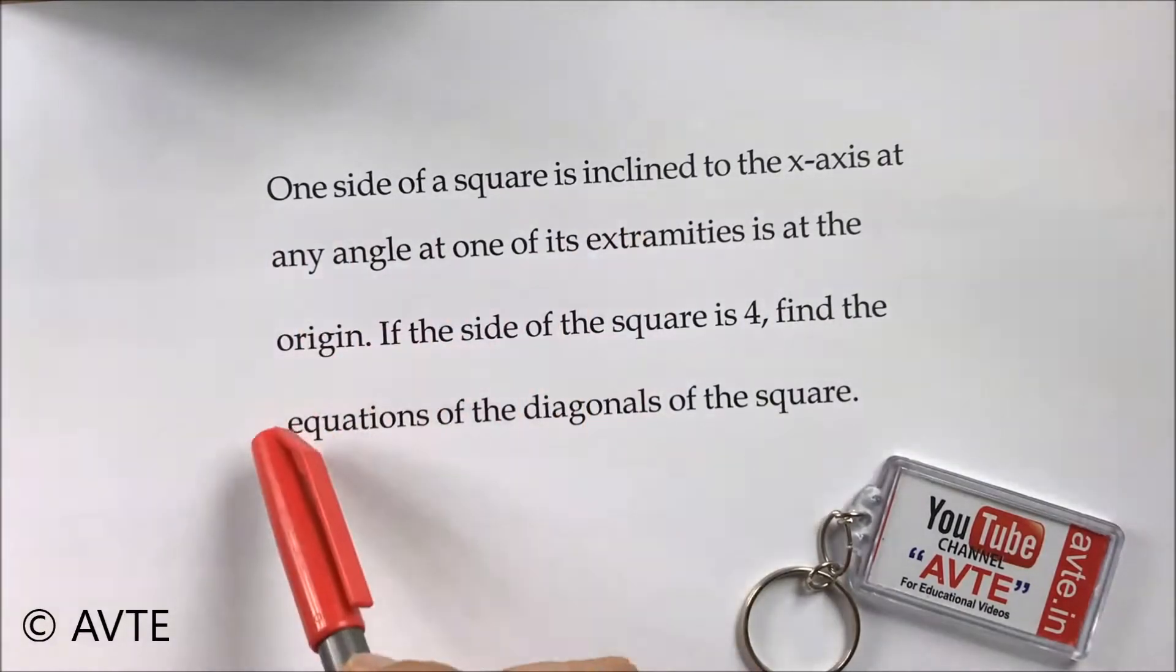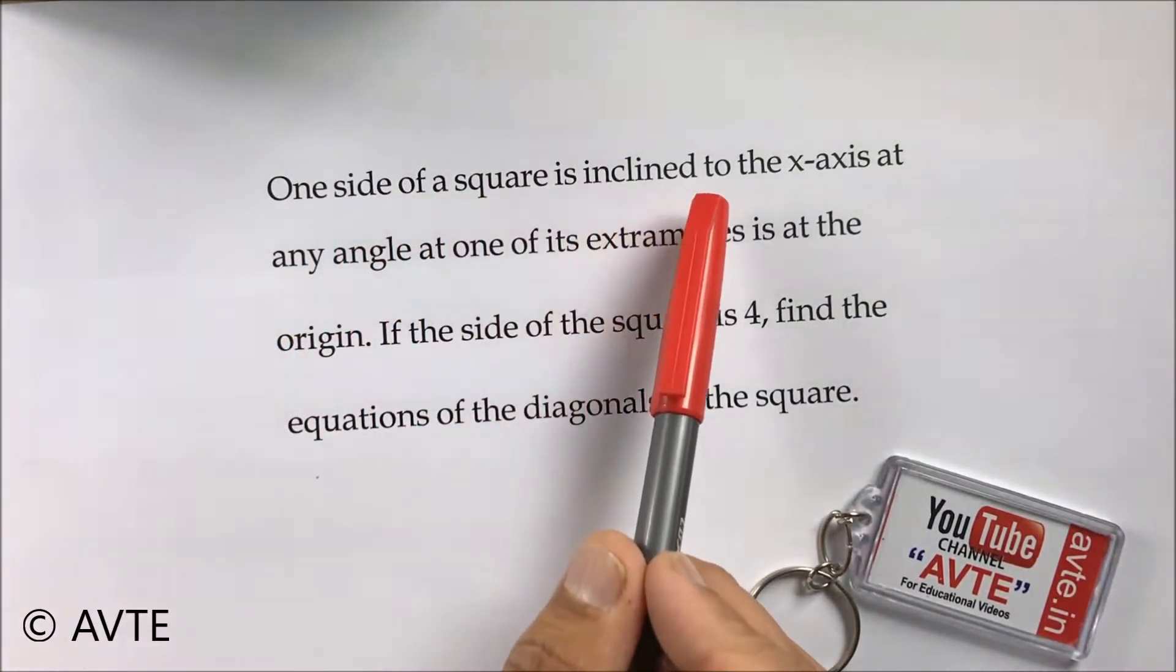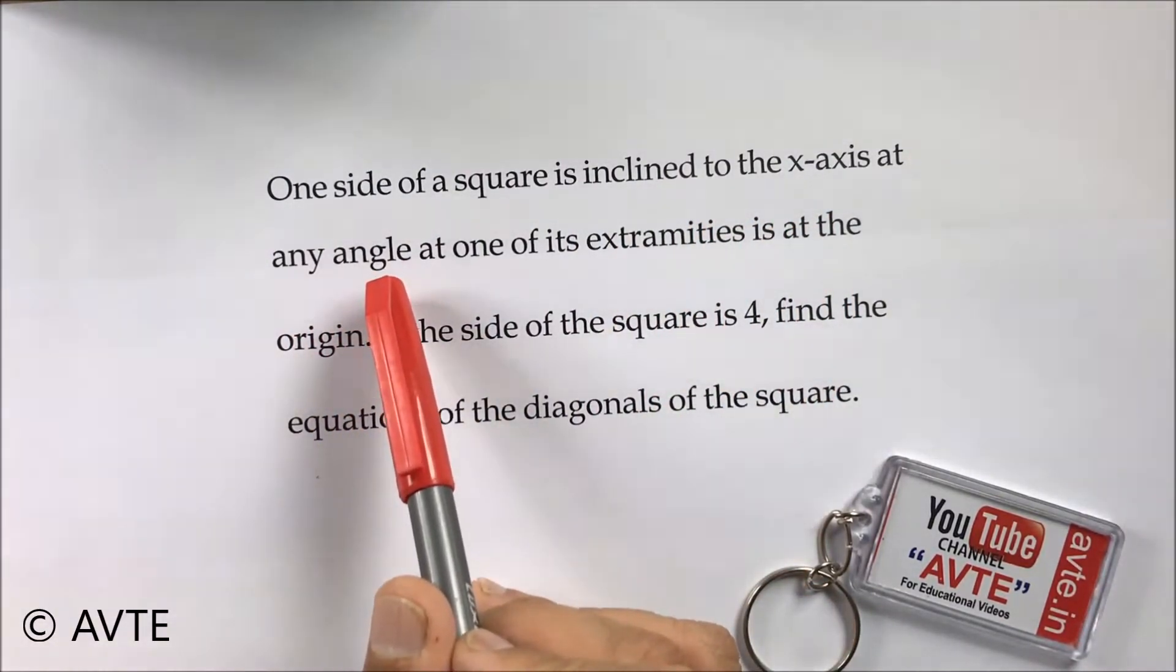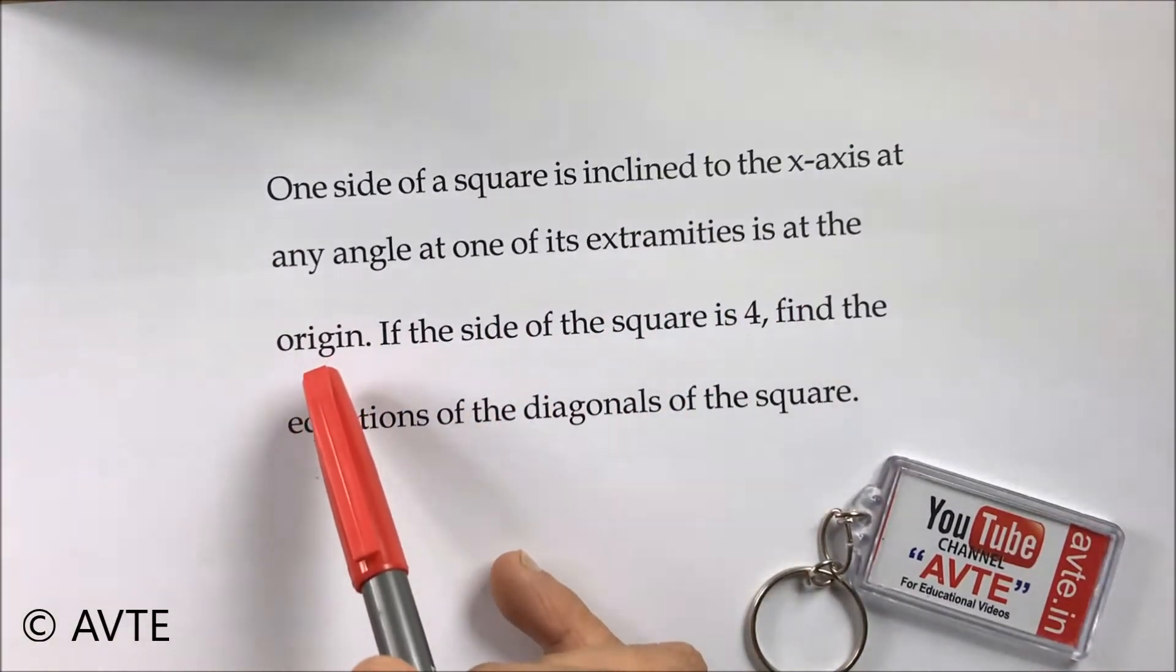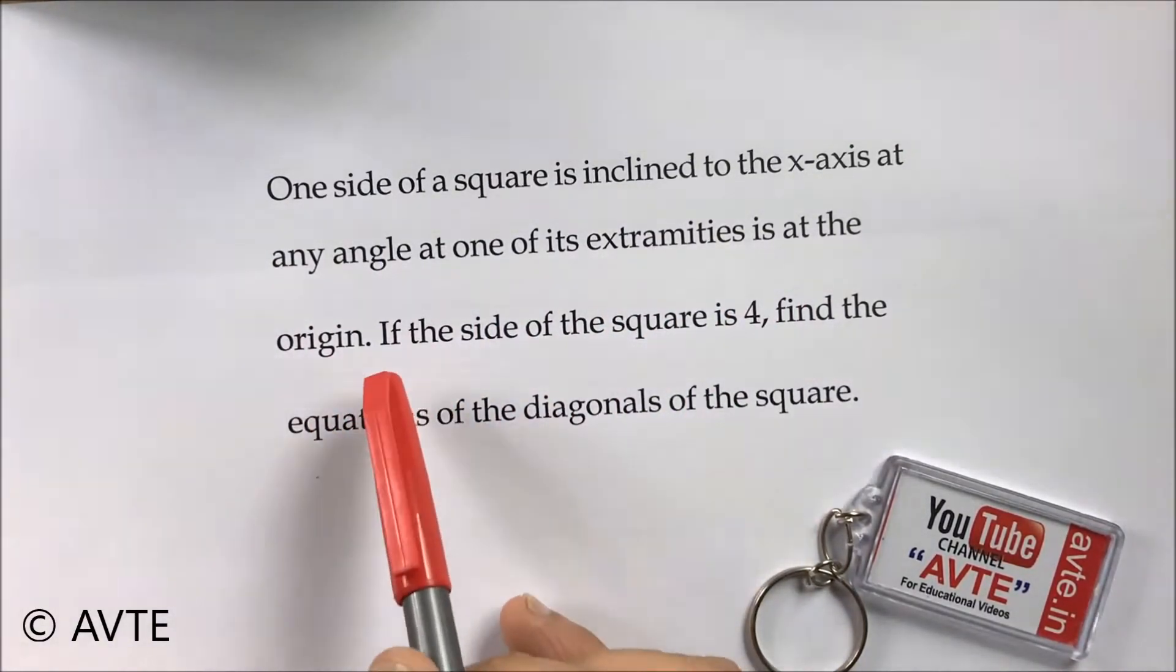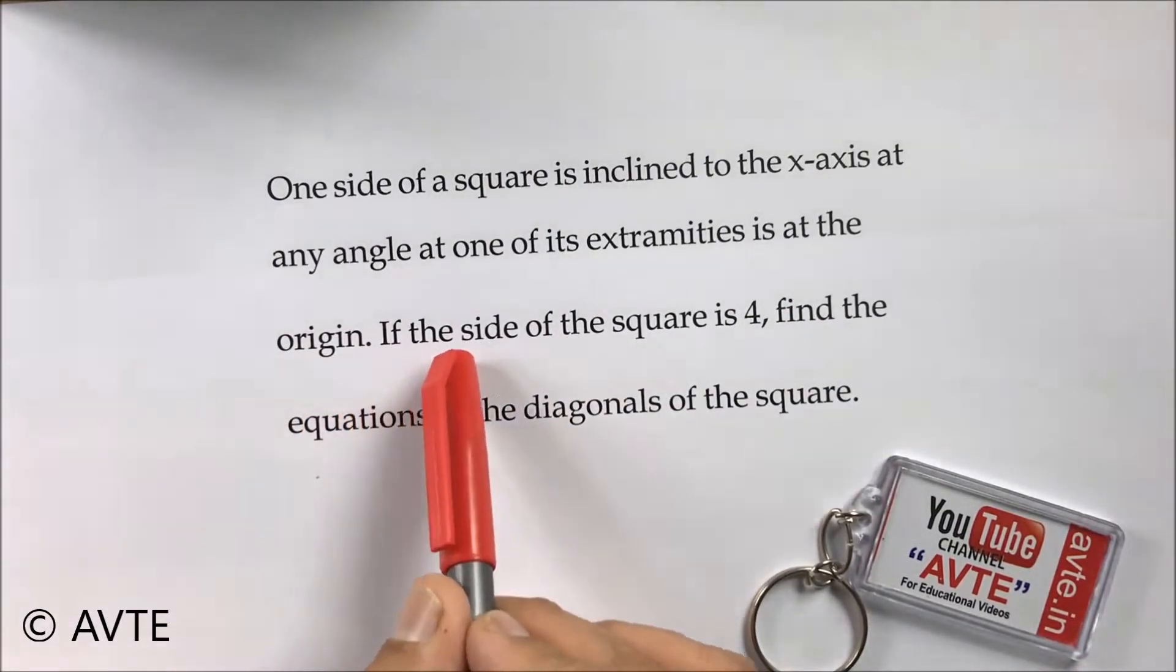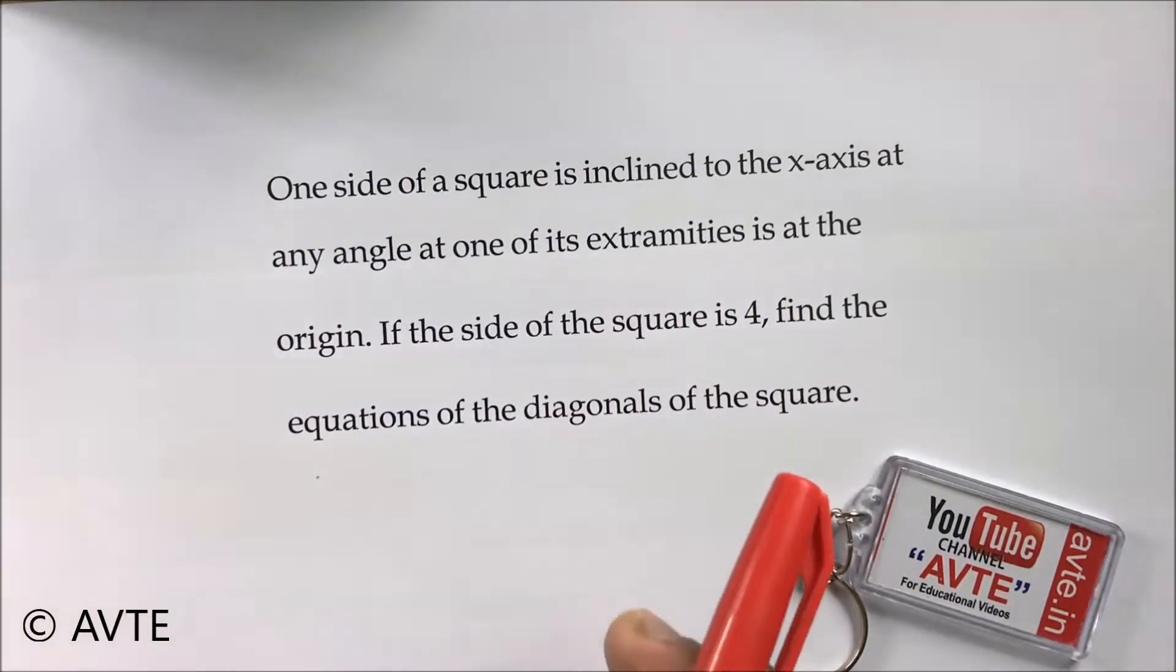One side of a square is inclined to the x-axis at any angle and one of its vertices is at origin. So we can make the diagram, and at the same time the length of each side of a square is four units. So let's make the diagram.